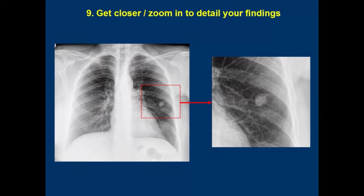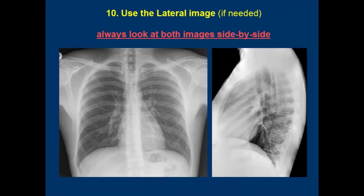9. Now get closer to detail your findings. Look at each lesion, memorize the details, then step back again and analyze any possible causality relations between them. 10. Now is the time to use the lateral image if you have one. Frontal and lateral images must be analyzed side by side, not separately. Never try to analyze a lateral image alone — it's worthless without the corresponding frontal view.